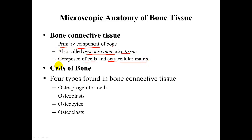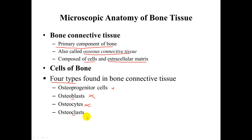The cells of bone consist of four types. They are the osteoprogenitor cells, which are stem cells; the osteoblasts, which will build bone; the osteocytes, which help maintain bone in normal everyday activity; and lastly the osteoclasts, which cleave or destroy bone — a process termed bone resorption.